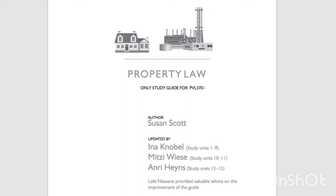The definition of the law of things: the law of things can be defined as a branch of private law which consists of a number of legal rules that determine the nature, content, vesting, protection, transfer, and termination of various real relationships between a legal subject and a thing, as well as the rights and duties ensuing from these relationships.